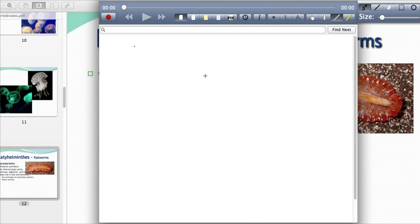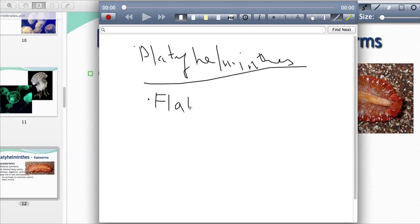What phylum is this? This is platyhelminthes. This is bad handwriting, but you get the point. Platyhelminthes, all right, so they are called the flatworms. You need to know that, flatworms. Try to make that a little neater. Flatworms.